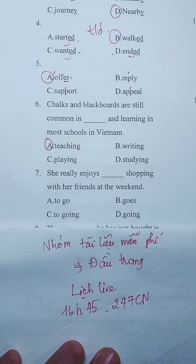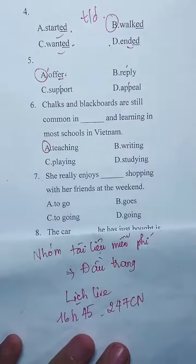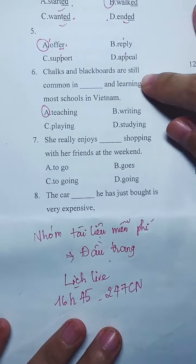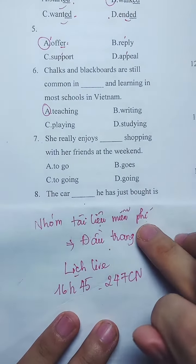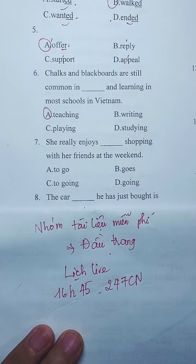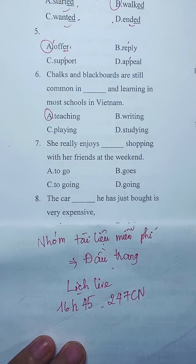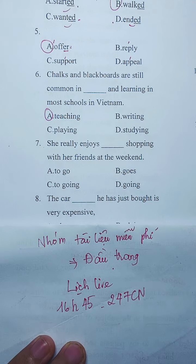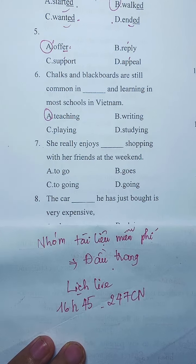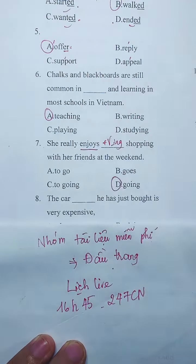Câu 7 là một câu dễ: cô ấy rất thích đi shopping với bạn vào ngày cuối tuần. Bạn nào muốn lấy tài liệu, bấm vào đầu trang sẽ có link nhóm tài liệu hoàn toàn miễn phí. Câu 7 thì chúng ta sẽ có 'Enjoy' cộng V-ing nhé. Thích làm gì - bạn chọn đáp án đi.